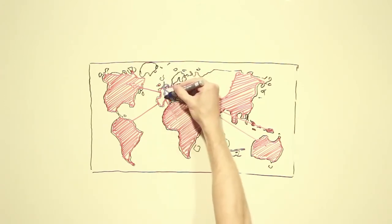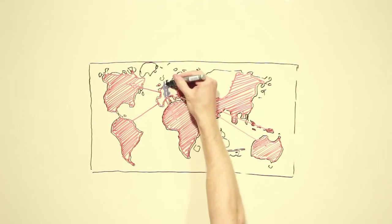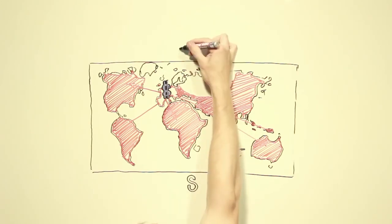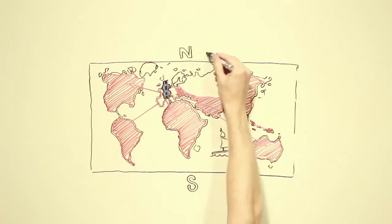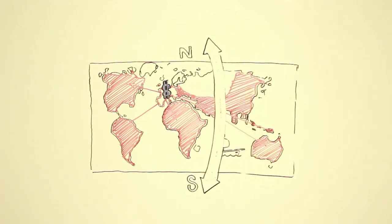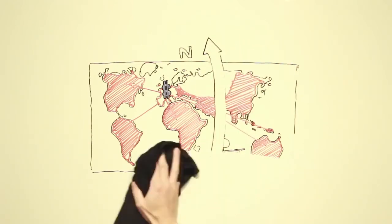Until today, economic and political power is concentrated in Europe, and until today, Europe is placed in the center of many world maps. In the same way, this power relation is reflected by the division of north and south and up and down.